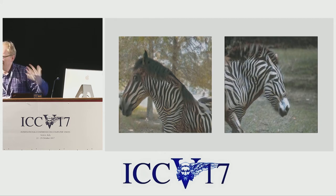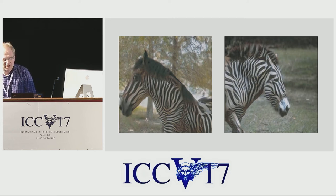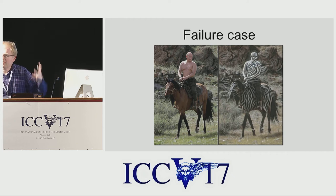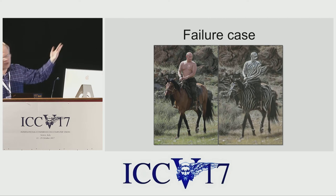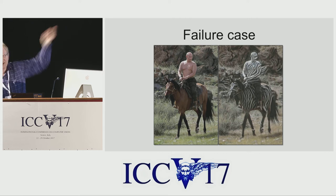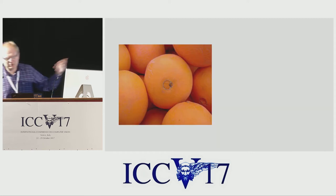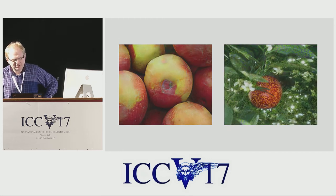Sometimes it also changes the savannah a little bit — maybe making the greenery more yellow. This is also why some of the failure cases are kind of entertaining. The horses-and-zebras model never saw a human, so when it did encounter one, the correspondence algorithm didn't know what to do. It assumed that Putin here was part of a horse, which is not unreasonable given that it's a completely unsupervised problem. We can also turn oranges into apples and apples into oranges.